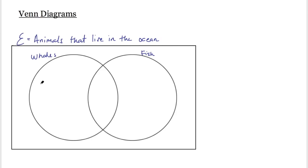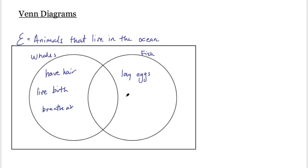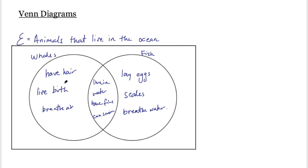For example, a whale has hair, a live birth, and breathes air. Then I have to consider the things a fish has that a whale does not — fish lay eggs, have scales, and breathe water through gills. When filling in the Venn diagram, you consider what each set has that the other doesn't. Then you consider what they have in common — they both live in water, have fins, and can swim. So within a Venn diagram you have a universal set and subsets represented by circles, with unique and shared properties.